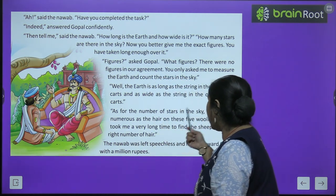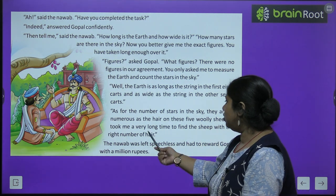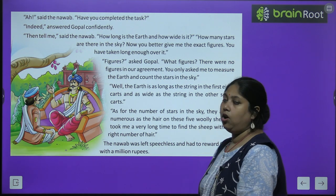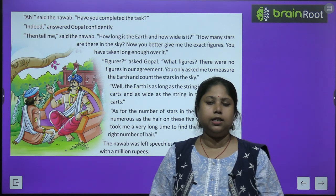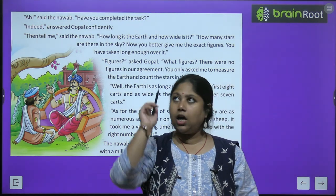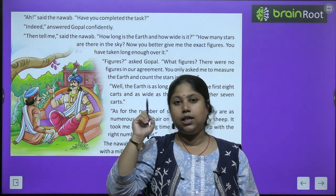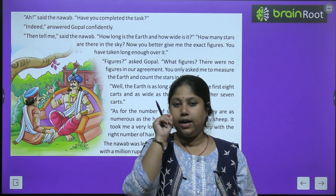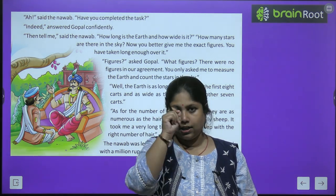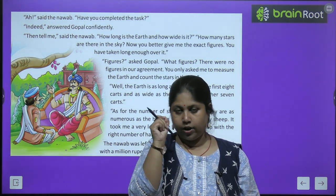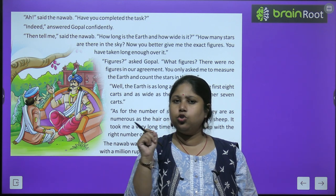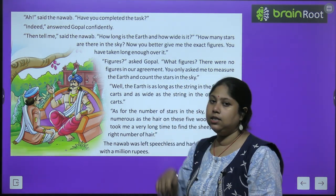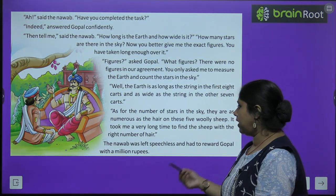'As for the number of stars in the sky, they are as numerous as the hairs on these five woolly sheep.' So if you count the hairs on the bodies of those five sheep, that gives you the count of the stars.